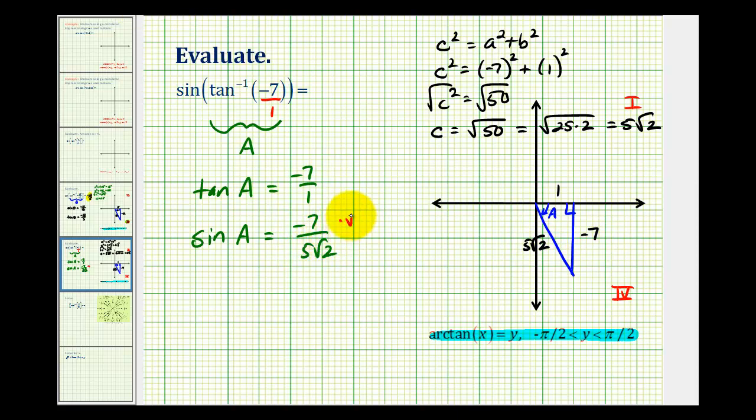We can rationalize this. So we'll have negative seven square root two. This is going to be five times two, which is equal to ten. So this expression is equal to negative seven square root two divided by ten.